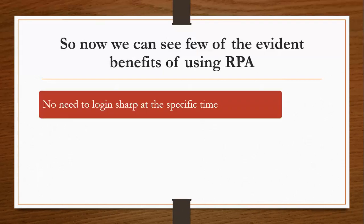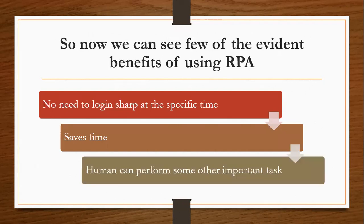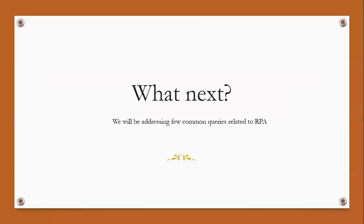The evident benefit here is that the agent no longer has to log in at a sharp specific time like 4 o'clock every day just to download a report. It saves time spent on repetitive actions that don't actually require human intelligence, freeing people up for something more important that does require human intelligence. These are a few common evident benefits of RPA. In the next session, we'll also cover common queries, myths, and misconceptions around RPA — such as the idea that RPA is here to take people's jobs. It's not. RPA is here to help people and free them from boring, repetitive tasks.